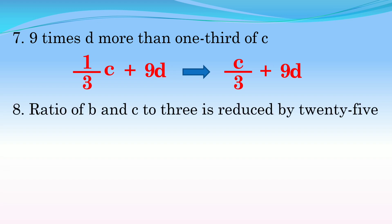Number eight: Ratio of b and c to 3 is reduced by 25. Ratio is division, so b divided by - bc divided by 3. 'Is reduced' is reduced by, so minus, that's subtraction. 25. So: (bc)/3 - 25. Ratio of b and c to 3 is reduced by 25.